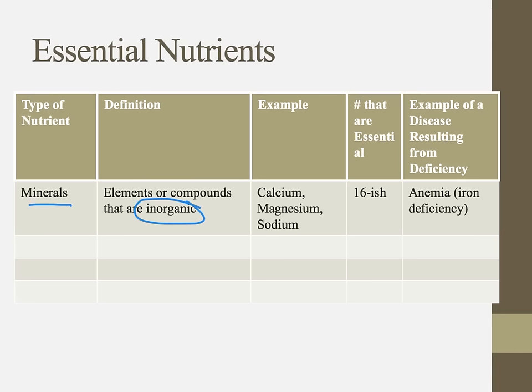There are about 16 minerals you need, though that number isn't exact because nutrition is a dynamic field — some people need certain things based on whether they're growing or have a specific disease. If you're deficient in iron, for example, that can result in anemia, which really impairs our ability to carry oxygen in red blood cells and manufacture hemoglobin. We see this commonly in women, partly because of the monthly shedding of the uterine lining.